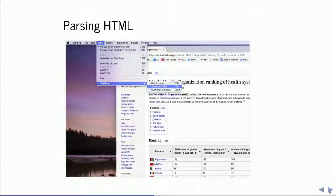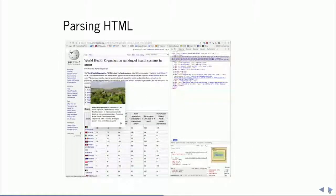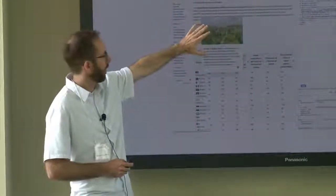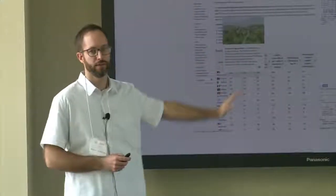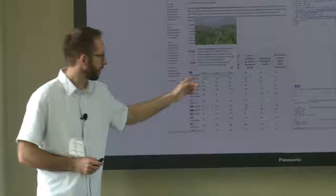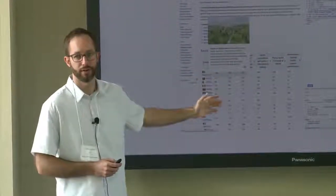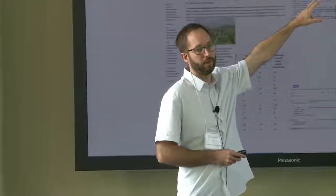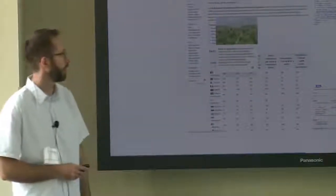A nice way to navigate the HTML tree, if you use Chrome, is to go to your View menu and under the Developer dropdown select Developer Tools. This pane will open showing the HTML alongside the page itself. What's nice about this tool is we can click and interact with the page to learn which section of the HTML contains our data. The way we do that is to right-click near the data we want — in this case somewhere in our table — select Inspect, and the associated part of the HTML code will be highlighted.